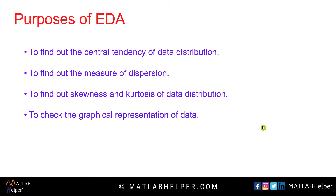The second purpose is to find out the measure of dispersion. The terms range, variance, and standard deviation will give us how data is distributed and how the data is related to each other. The third purpose is to check how much data is skewed by checking skewness properties and how much peakedness the data has by checking kurtosis.